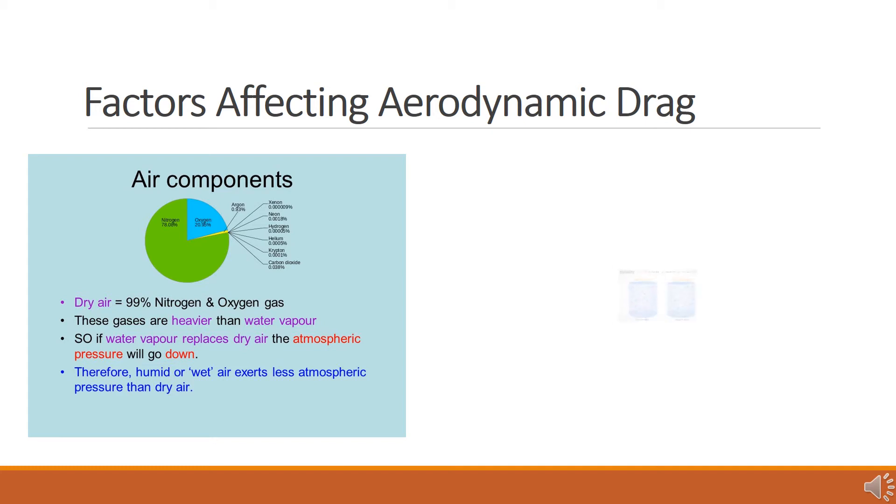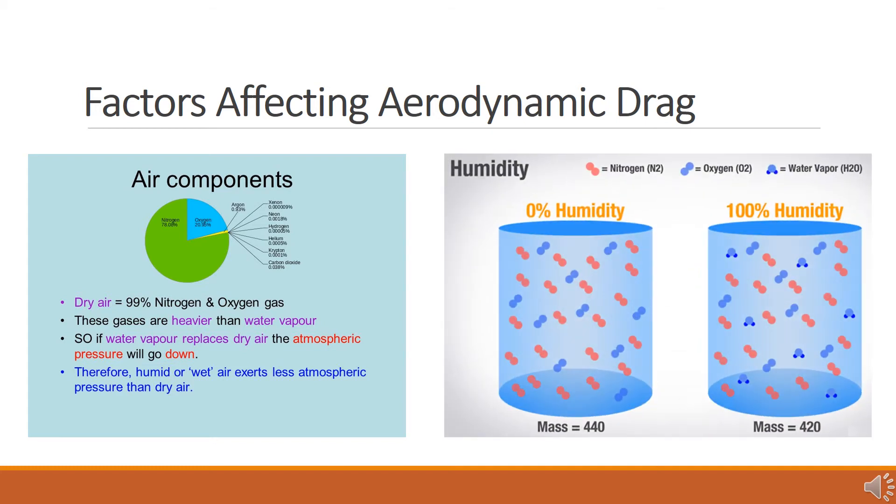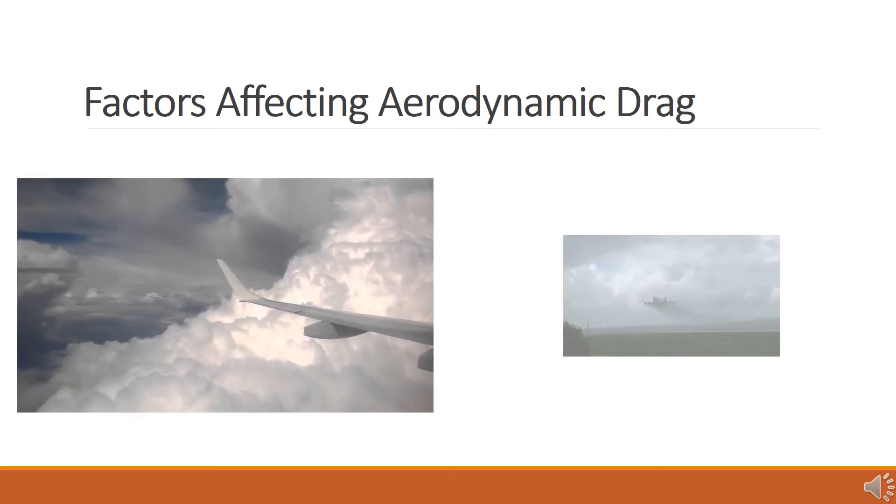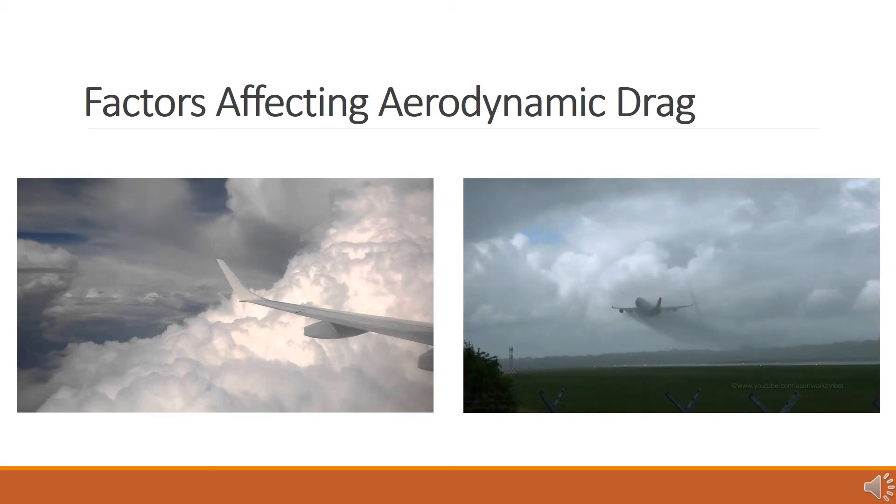Water vapor weighs less than the nitrogen or oxygen molecules that make up the rest of the air, and takes up about the same amount of space. So when you have more water vapor in the air, the air has less mass per unit of volume, which means it's actually less dense. That holds true until the humidity reaches a certain point when the water molecules start to condense into droplets that are contained in clouds or rain. At that point, density and drag significantly increase because the liquid water is denser and less compressible than water vapor.